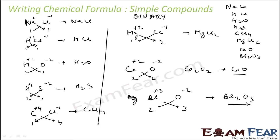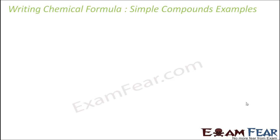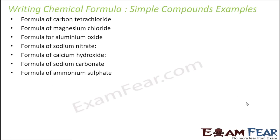That's how you write these compound amounts — it's very easy. Let's take some more questions now. Formula of carbon tetrachloride — we just saw it was CCl4. Carbon has a plus 4 charge and chlorine has a minus 1 charge, so this becomes CCl4.